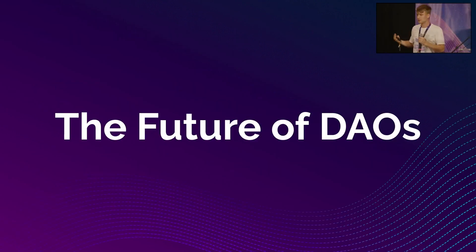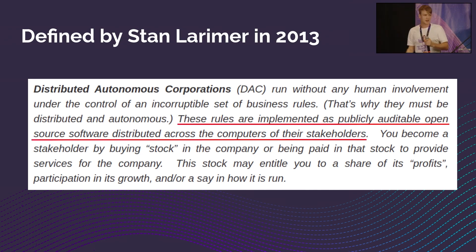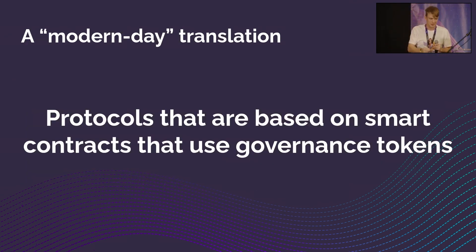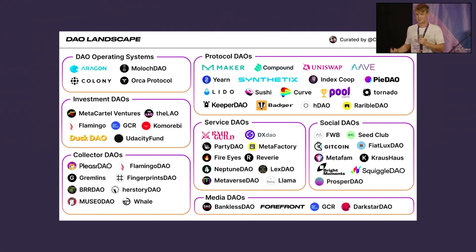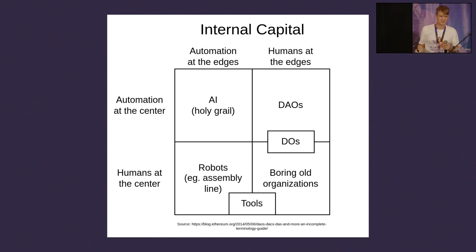I want to emphasize what the future of DAOs may look like. A distributed autonomous corporation was defined by Stan Lorimer in 2013 — before Ethereum was conceptualized. To summarize: these rules are implemented as publicly auditable, open-source software distributed across the computers of their stakeholders — essentially a smart contract. This stock may entitle you to a share of profits, participation in growth, and say on how it's run — basically governance tokens. A modern-day translation: protocols based on smart contracts that use governance tokens. Almost all DAOs can be considered distributed autonomous corporations. I took this from Vitalik's blog post and want to complete the definition of a DAO or decentralized autonomous corporation.